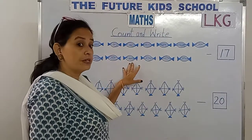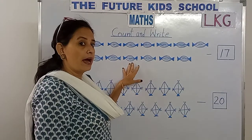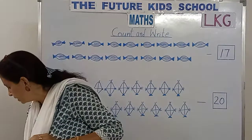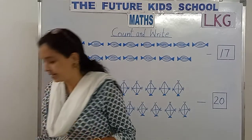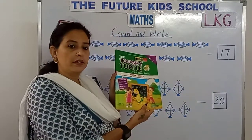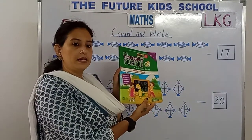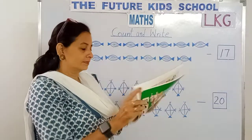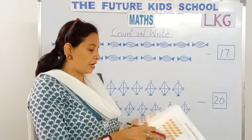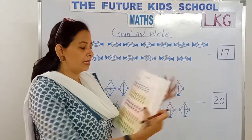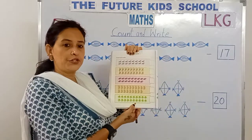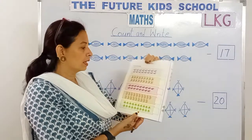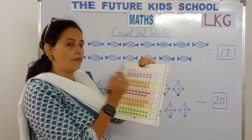So today we've learned the concept count and write. Now children, take out your writing skills book. Page number 110, children. Count and write.